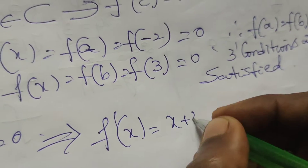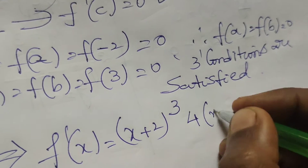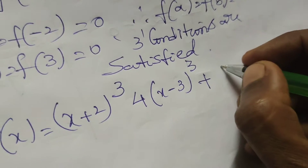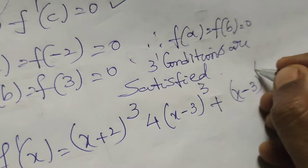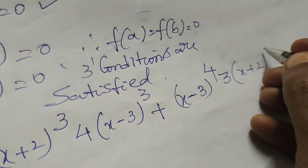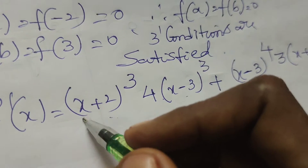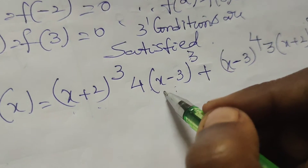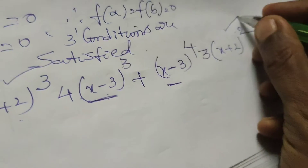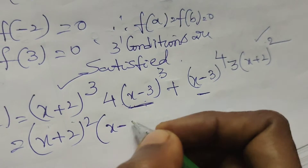Here u = (x+2)³ is treated as the first part. Differentiating (x-3)⁴ gives 4(x-3)³, and differentiating (x+2)³ gives 3(x+2)². Taking (x+2)²·(x-3)³ as common from both terms: